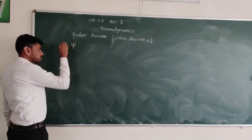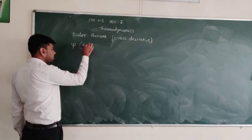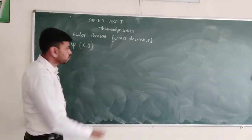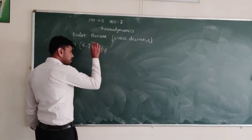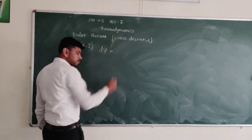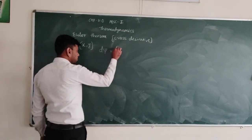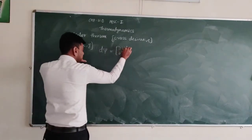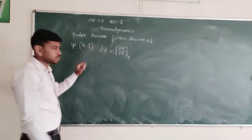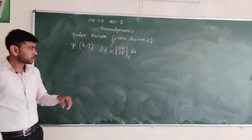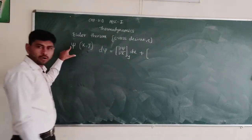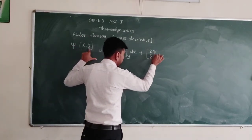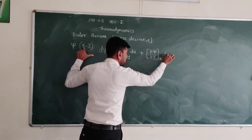Euler theorem: if psi is a quantity, suppose that psi is a function of x and y, then we know how to find out the total differential. The total differential is indicated by d-psi. D-psi is the summation of partial differentiation of these two quantities. First we have taken ∂ψ/∂x keeping y constant, multiplied by dx.